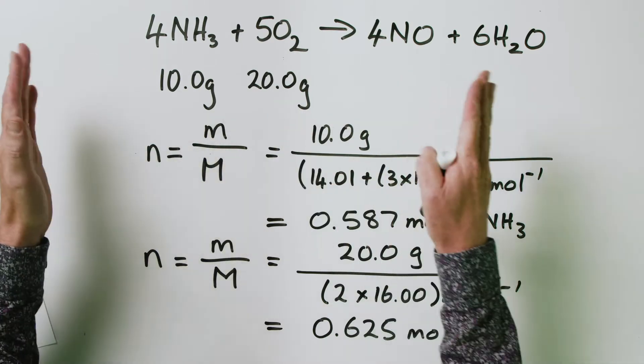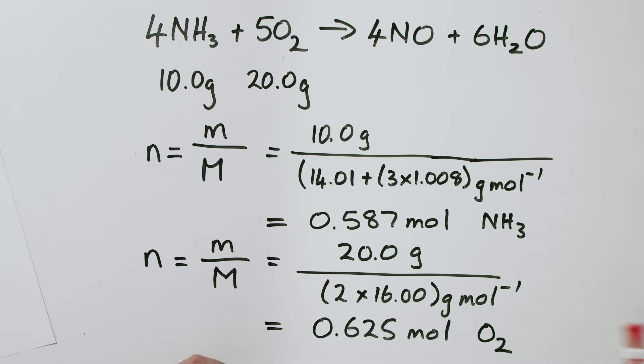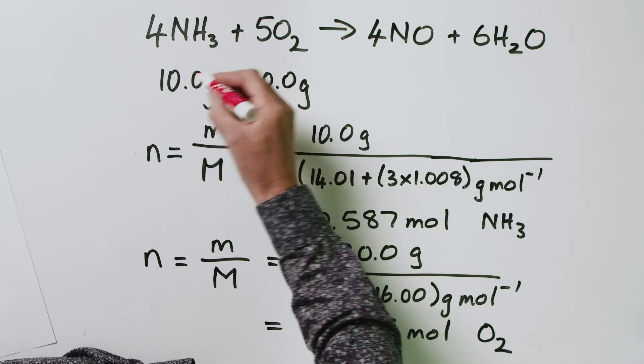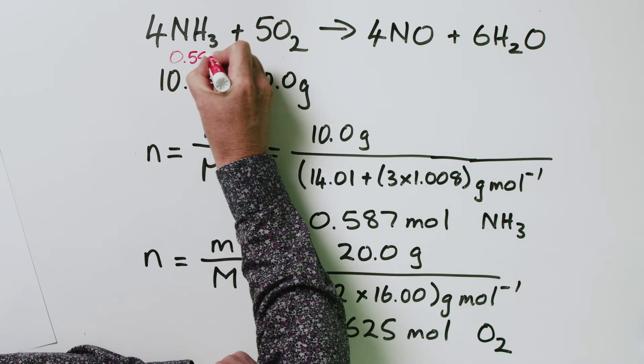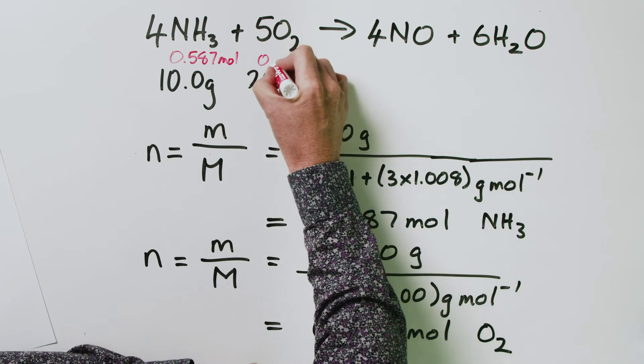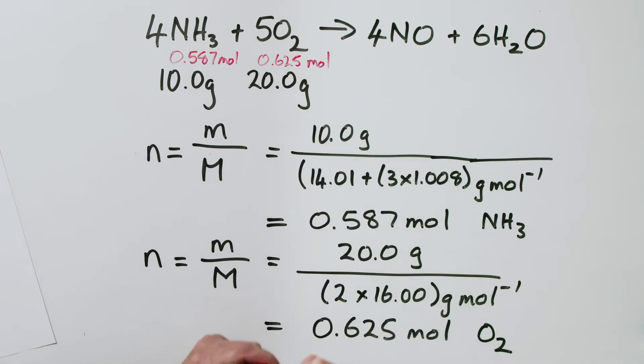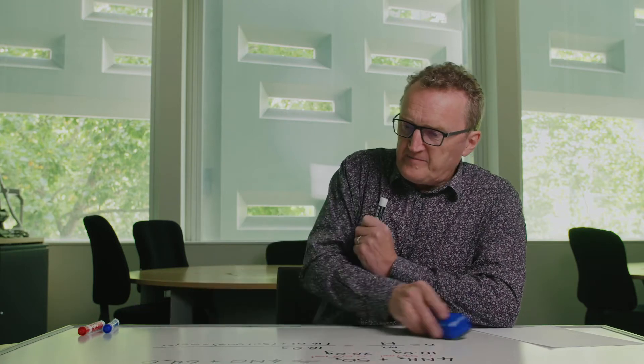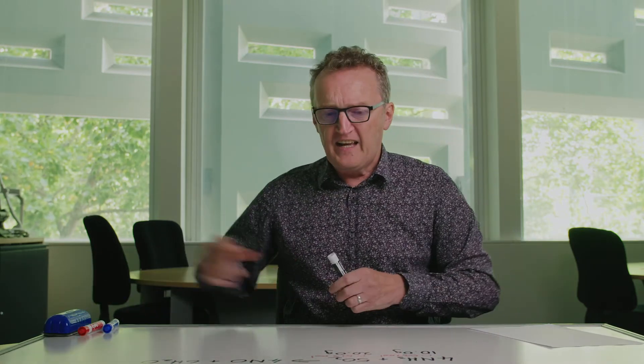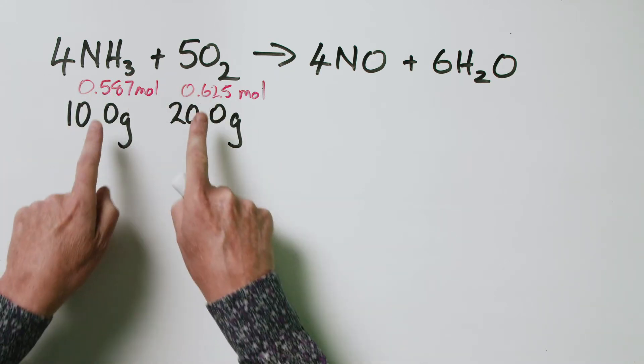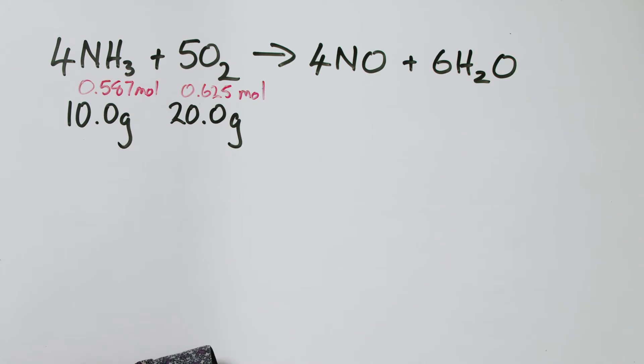That's as far as we can go with the data given. It's a limiting reagent problem because we're given the masses of both starting materials — that's a dead giveaway. We've got 0.587 moles of ammonia and 0.625 moles of oxygen. Now we check whether this is the correct mole ratio for the reaction, which requires a 4-to-5 mole ratio. Just eyeballing it, it looks kind of close.